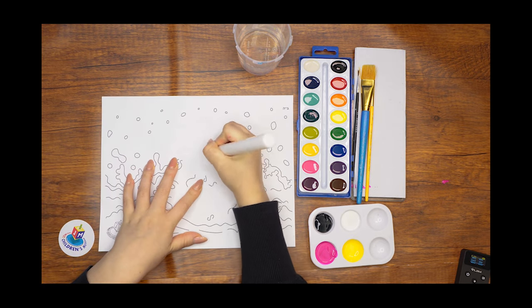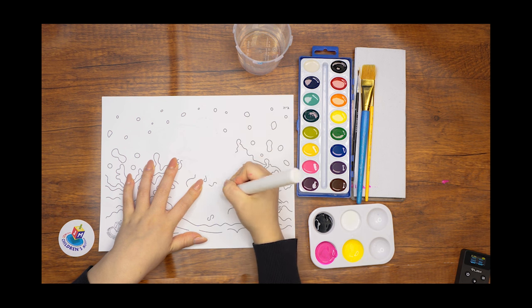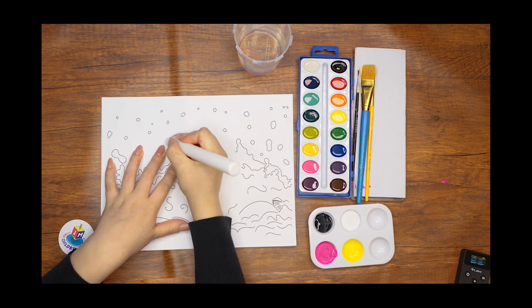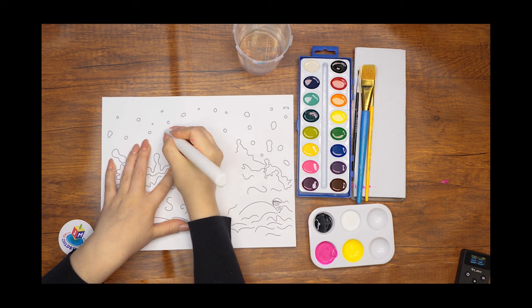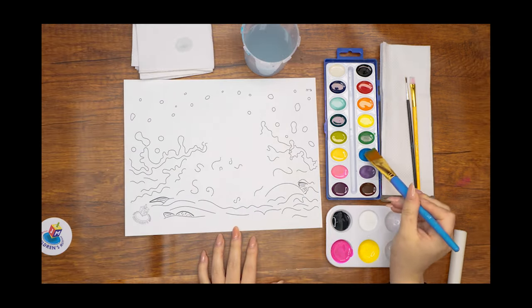Are you wondering why we are using a white candle if no one can see what we're tracing? Well, soon you'll find out what we're trying to accomplish. The wax of the candle creates a space that the watercolor paint resists. This means that the paint automatically pulls away and does not go wherever the wax goes. Now watch and see it with your own eyes.